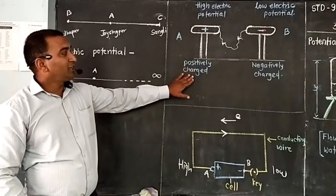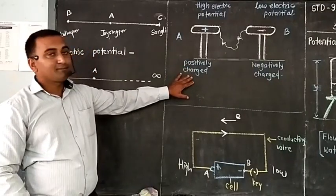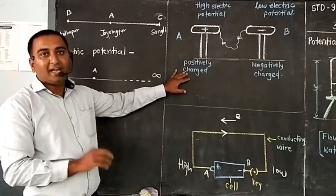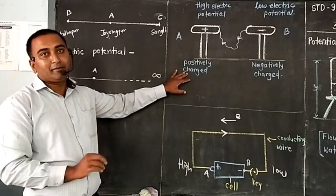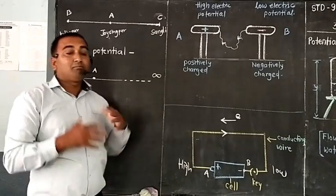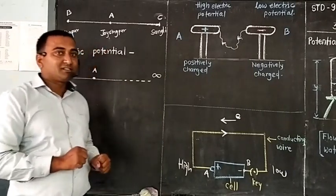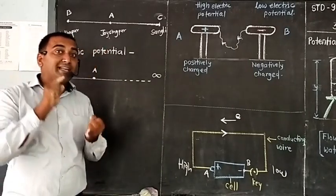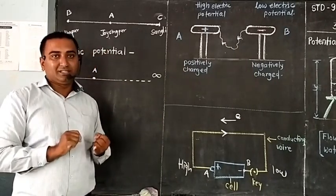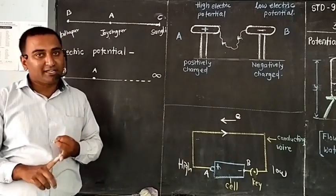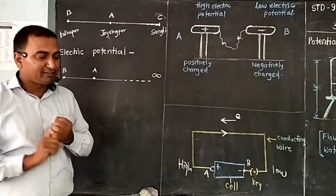Because of potential difference, electrons are flowing and current can be maintained. Now, in detail we should discuss what is electric potential and what is electric potential difference.